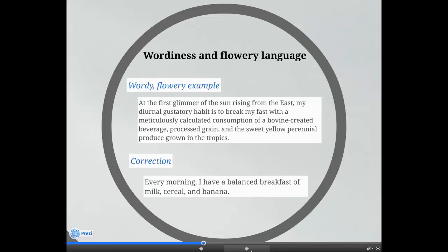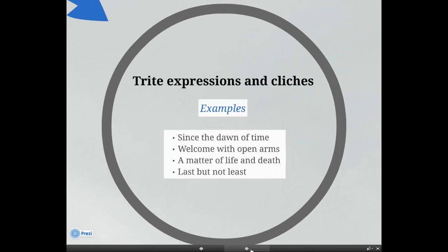Wordiness involves repeating words or their synonyms unnecessarily. Flowery language involves using too many adjectives or adverbs, big words, too many synonyms, that is thesaurus overkill, or overly complicated language. A wordy flowery example: At the first glimmer of the sun rising from the east, my diurnal gustatory habit is to break my fast with a meticulously calculated consumption of a bovine created beverage, processed grain, and the sweet yellow perennial produce grown in the tropics. This example may seem ridiculous, but writers sometimes mistakenly believe that they must use bigger or more technical words to make their writing more impressive.